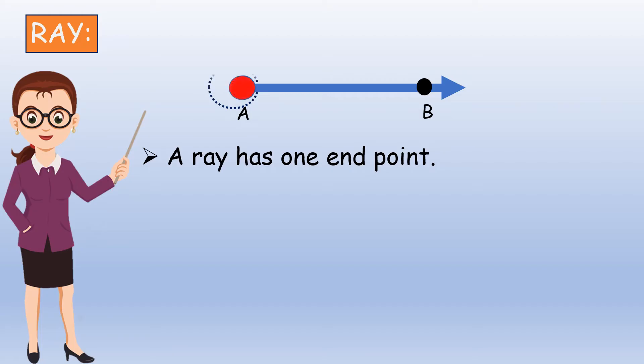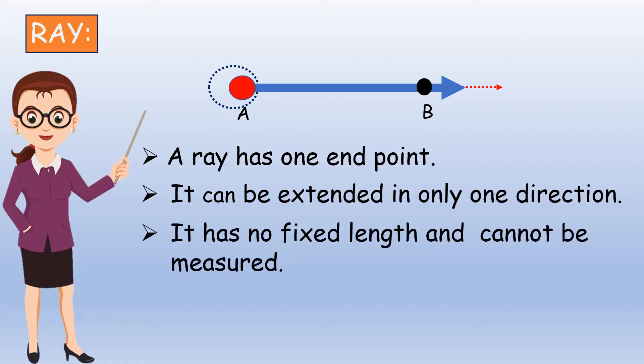Ray. A ray has one end point. It can be extended in only one direction. It has no fixed length and cannot be measured. It is denoted by the symbol.